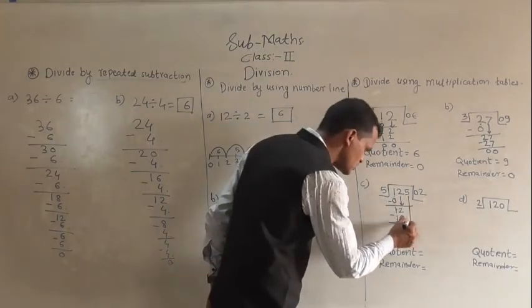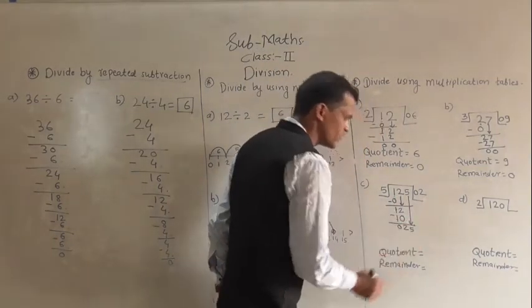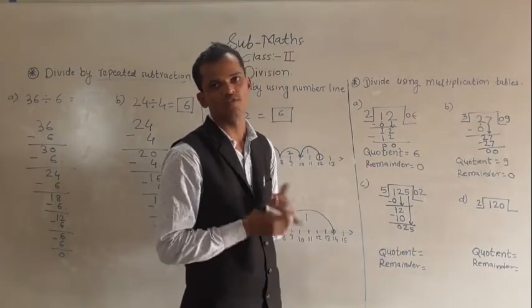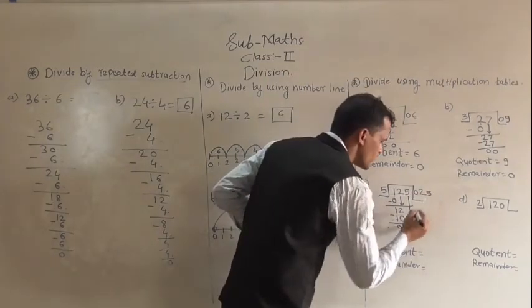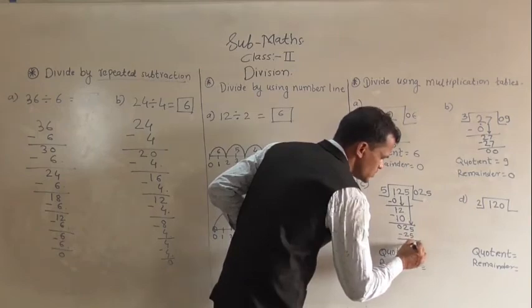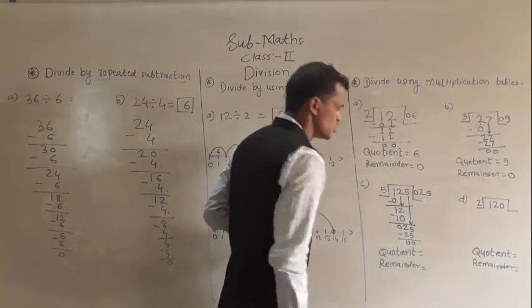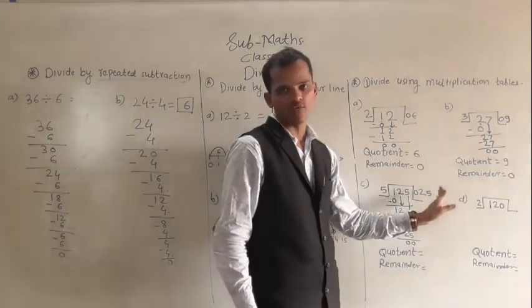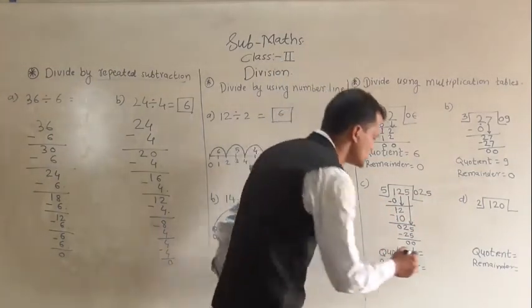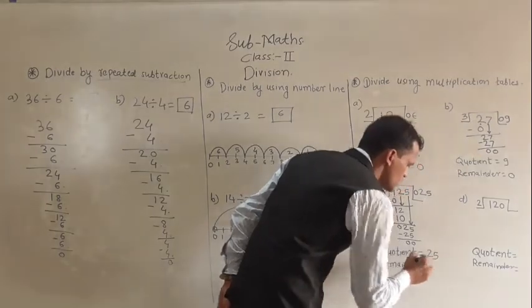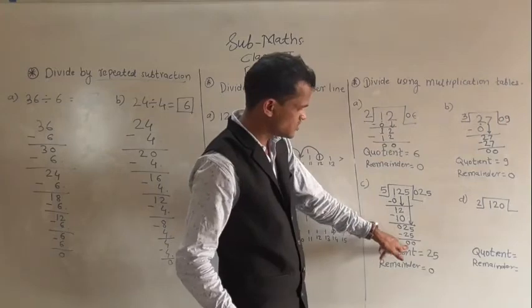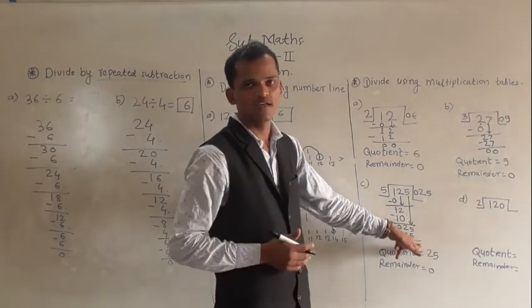Take the next digit down: 25. Now 5 fives are 25. Our answer is ready: the quotient is 25 and the remainder is 0.